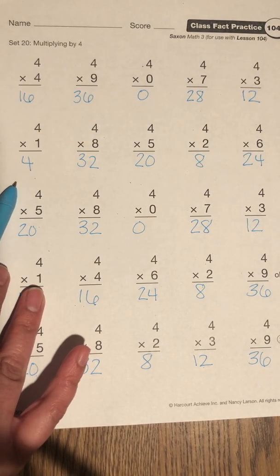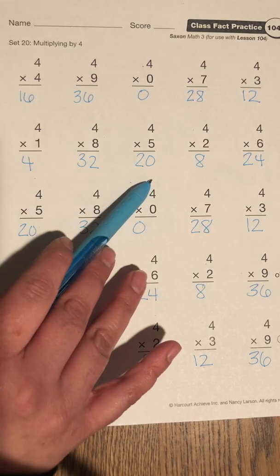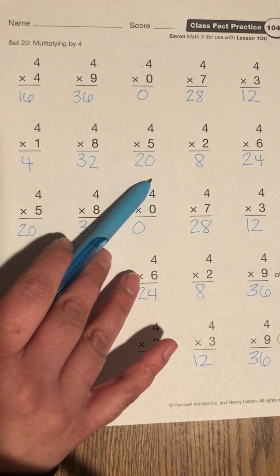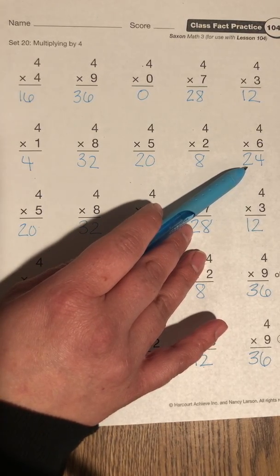4 times 1 is 4. 4 times 8 is 32. 4 times 5 is 20. 4 times 2 is 8. 4 times 6 is 24.